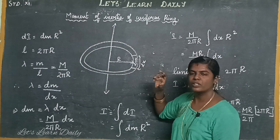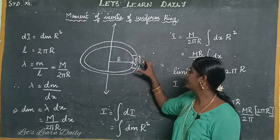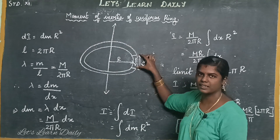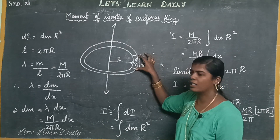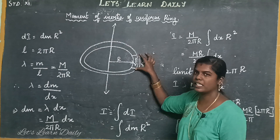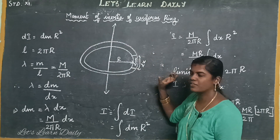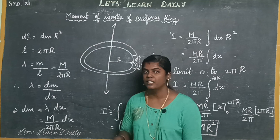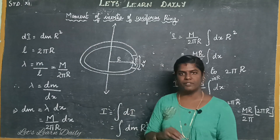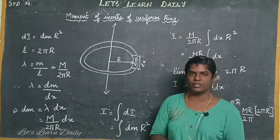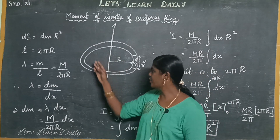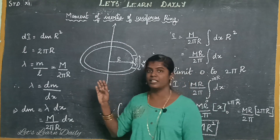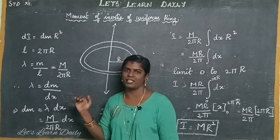If you calculate a small distance, calculate the value of x. There is an object at a distance, so the distance exists in that direction. After calculating the moment of inertia, the moment of inertia is given equal to M times R.